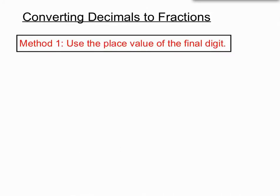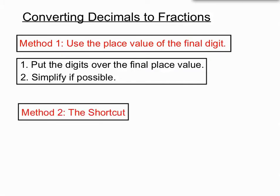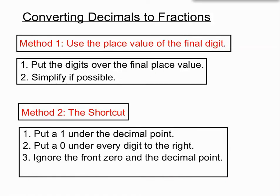To summarize: method 1 uses the place value of that final digit, and we use that to create the bottom of our fraction, and then we simplify if we can. The shortcut method: we put a 1 under the decimal point, we put a 0 under every digit to the right of that, and then we kind of just choose to ignore the 0 and the decimal point. It's a bit of a cheeky shortcut, and then we simplify if possible again. So those are the two main methods to turn decimals into fractions.